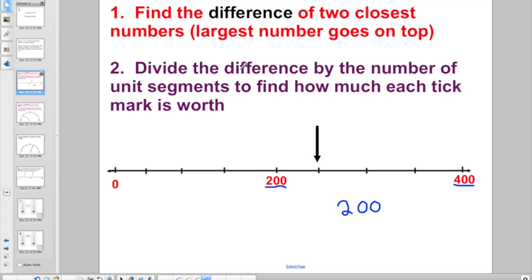And then you have to divide that difference by the number of unit segments to find out how much each tick mark is worth. Remember, unit segments is the space. So there's one unit segment, two segments, three unit segments, four unit segments, right? So I'm going to take my 200 and divide by the number of unit segments to find out what each tick mark is worth. Let's divide into 20. Four times what gets me close to 20? That's five. Multiply it back for 20, subtract it for zero. Bring down another zero. Four divides into zero, four times what is zero? That's zero. Multiplies back for zero and subtracts for zero. So it has no remainder.